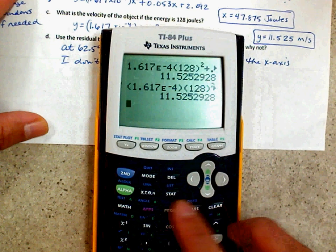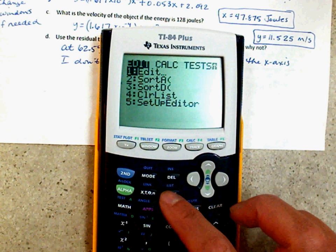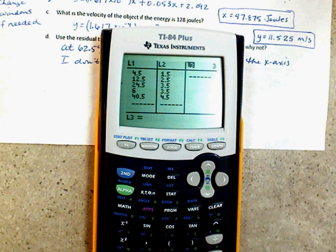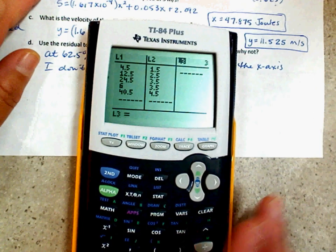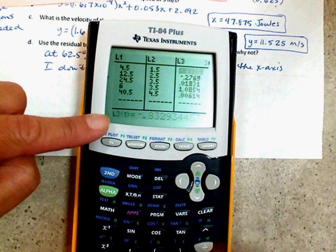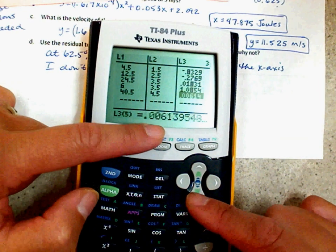You can hit STAT. Actually, second. No, edit. Enter. Enter. Go to L3. Remember how you do residual? Second, STAT, number 7. Enter. And it found all your points for you. And all the numbers are listed right here. If you want all the numbers.